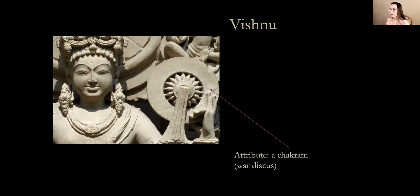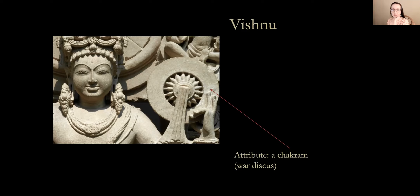Let's start with the Chakram — this bladed wheel that looks somewhat like a seamstress's tool or a turning blade. It is a weapon distinct to the Indian subcontinent that can be held or thrown, and it is Vishnu's attribute: his discus. If you see this in a temple sculpture and it's not a female figure — in which case it might be Durga, to whom Vishnu sometimes loans his Chakram — then you're looking at Vishnu.